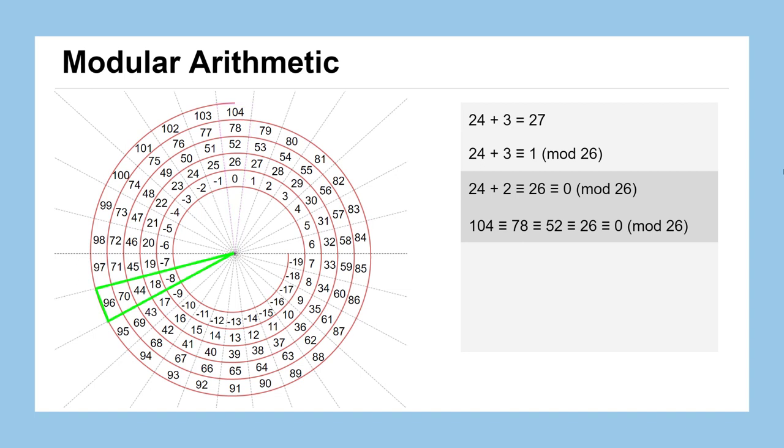It works for negative numbers as well. So if we did 15 minus 23, you might have thought negative 8, which lands us in that green wedge back on the spiral. But if we wanted to represent an equivalent number mod 26, we could do 18.